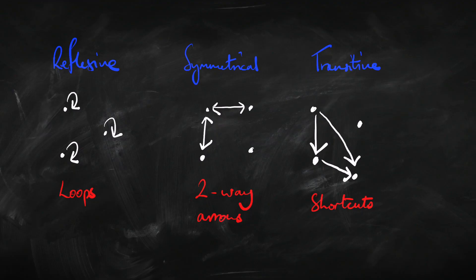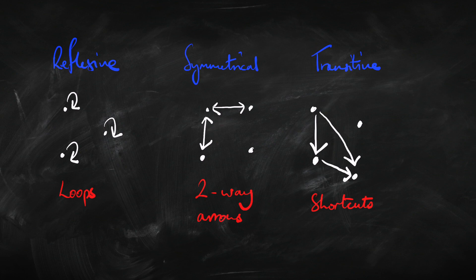Let's do a quick recap and remind ourselves what those three properties are. In a reflexive relation, every blob has a loop on it. So if we're thinking about possible worlds, we're saying every possible world is possible relative to itself. A symmetrical relation is one where if there's an arrow going one way, then the arrow comes back again, so all of the arrows are two-way arrows. If one world is possible relative to another, then each of them are possible relative to the other — possibility goes both ways. A transitive relation is one where you can take shortcuts: if I can go from A to B and B to C, then I can go directly from A to C.